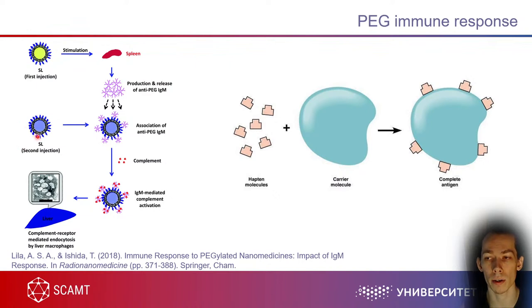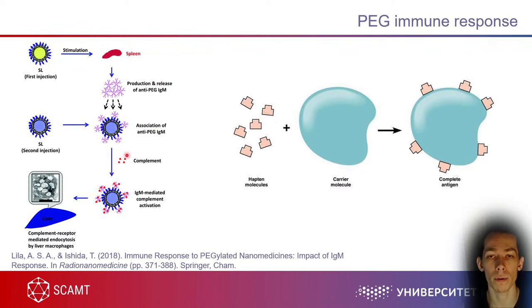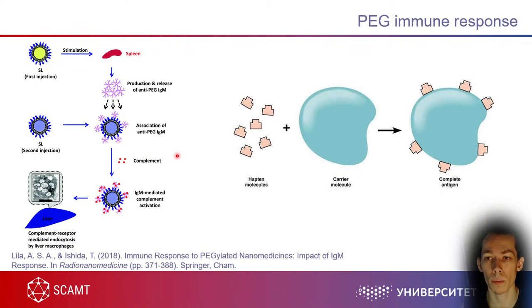This was not found earlier because in vitro investigations or animal studies lacked proper protocols — usually there was just a single injection into mice. But what happens after a second, third, or fourth injection was not studied. It was only about 15 years ago that scientists found PEG caused a strong immune reaction upon second or third intravenous injection.